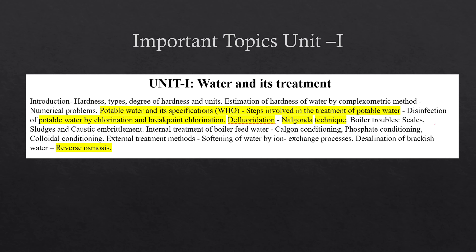The topics highlighted in yellow are important for unit 1: water and its treatment. These include potable water and its specifications according to the WHO (World Health Organization), defluoridation using the Nalgonda technique — how defluoridation happened so people could drink clean water — and reverse osmosis, which is a technique where you use certain methods to purify water from hard water to drinkable soft water.